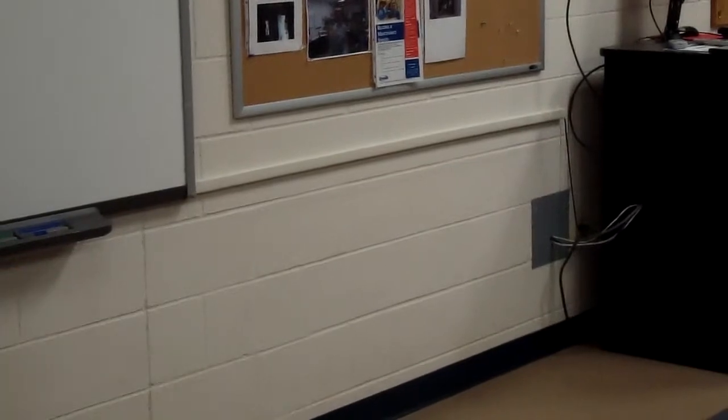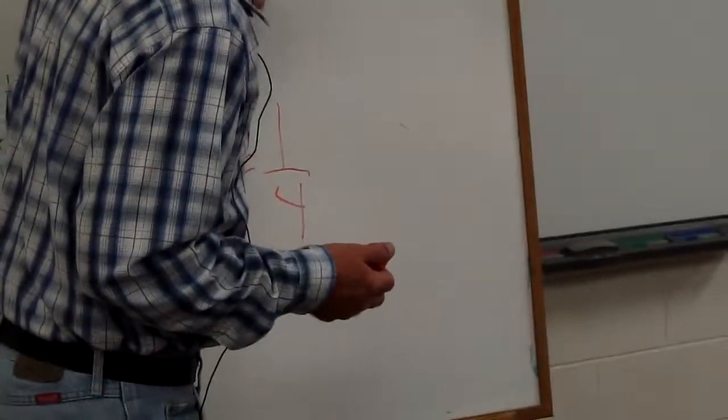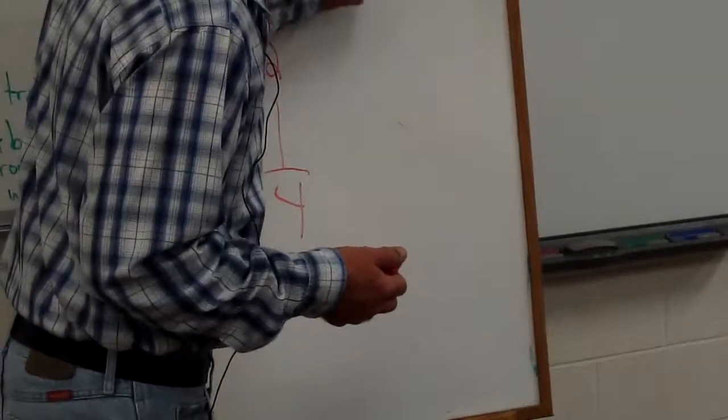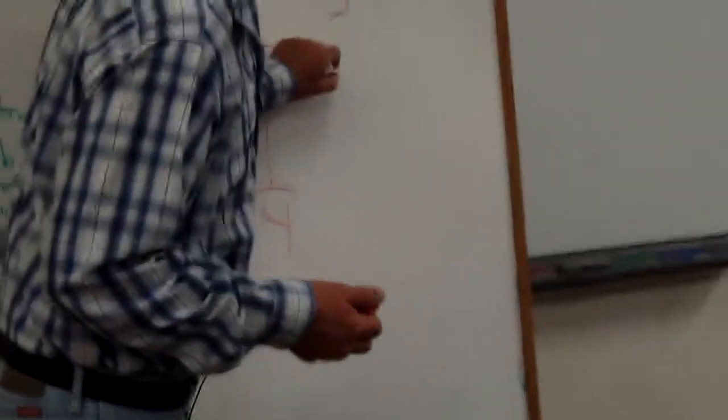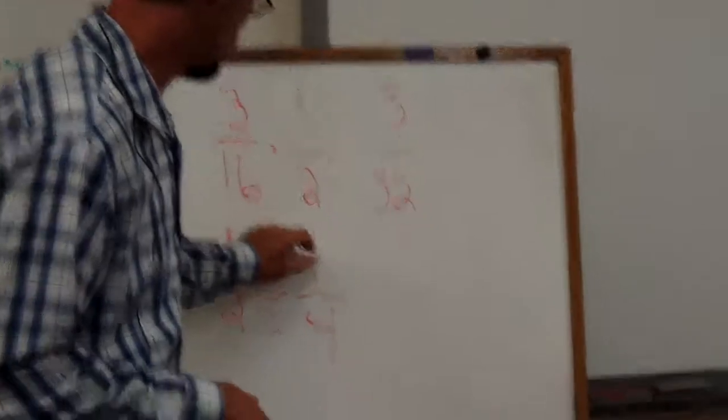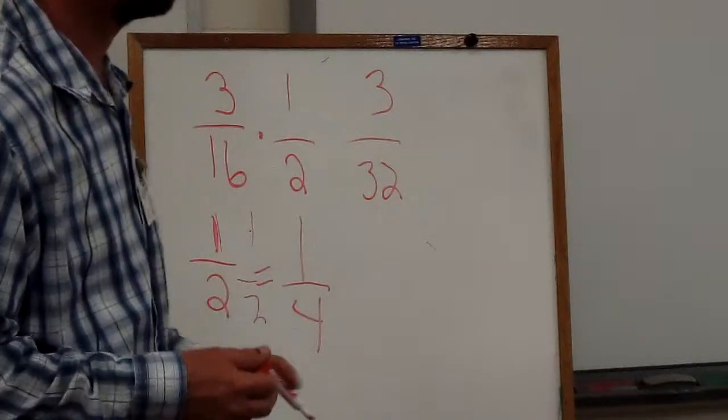So now thinking about how did you get there? Basically all you're doing is multiplying this by one half. So three thirty-seconds is half of that. Same thing here. If you multiply this by one half, one times one is one, two times two is four. That's all it is.